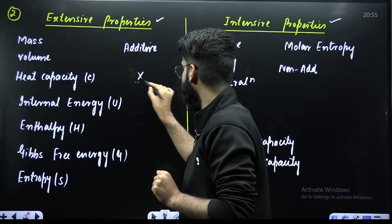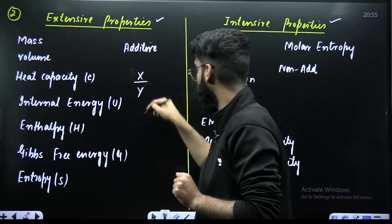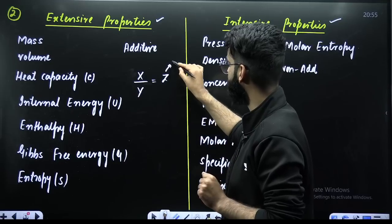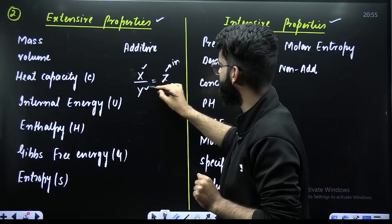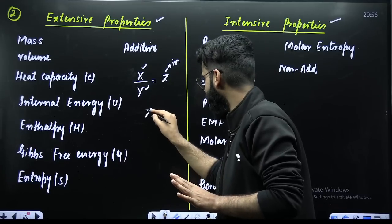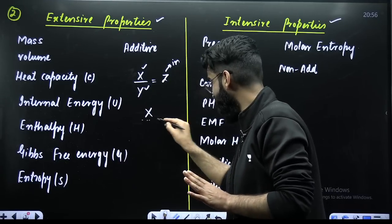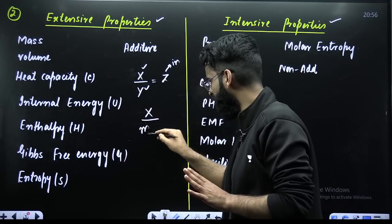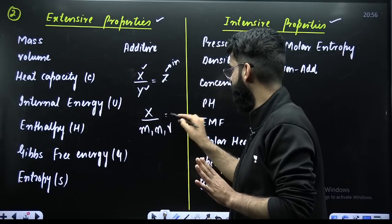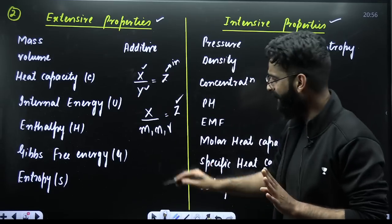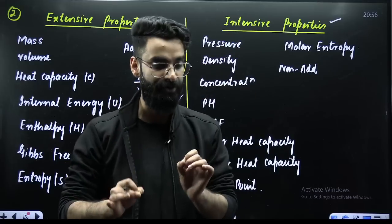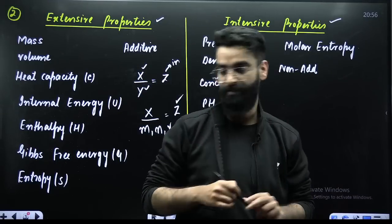Number two: when you divide two extensive properties, the new property that comes into play will always be intensive. If this is extensive and this is extensive, the division of these two becomes intensive. And remember, whenever an extensive property is expressed per unit mass, per unit mole, or per unit volume, the new property that comes into play becomes intensive. Remember these points about extensive and intensive — anything can be asked and will be asked for sure. This was concept number two.